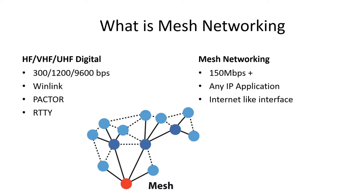We also have DSTAR high-speed data at 128 kilobytes a second. It isn't bad for what it is, especially since you can do things with it you can't do with mesh. But vice versa — on mesh, I can give you a 150 megabyte-per-second link. That's all things being perfect. But I can send cameras, send files. If you give me a zipped file of 50 megs of data to send from the command post out to a field unit, we can do it. Any IP application — it's an internet-style interface. You can use a browser, set up Raspberry Pis, anything. Just like a lot of things we do in ham radio, the sky's the limit. It's a network for tinkering.